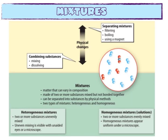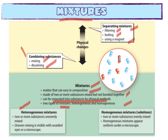We have mixtures. To separate a mixture, we can use filtering, boiling, or a magnet. In combining substances, we mix and dissolve substances. Take note: a mixture may vary in composition, is made of two or more substances mixed but not bonded together, and can be separated by physical methods. There are two types of mixture: heterogeneous and homogeneous. In heterogeneous mixtures, the mixing is not even — you can see many distinct parts. In homogeneous mixtures, the substances are evenly mixed and you see a uniform appearance.